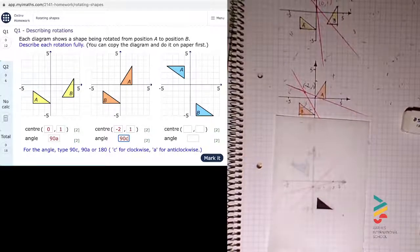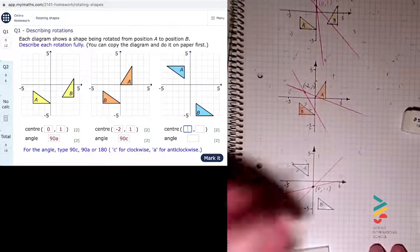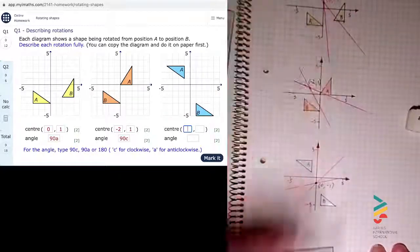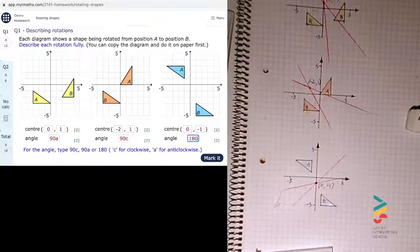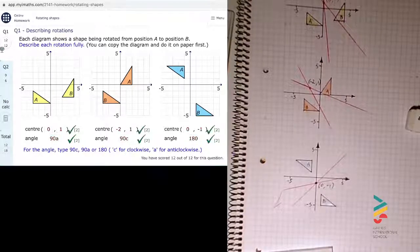I'll just fill that in on the MyEyeMaths. It's zero minus one with an angle of 180 degrees. So we'll just mark that, and we've got full marks for that.